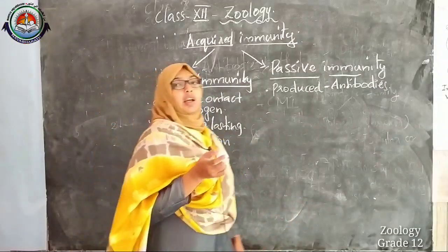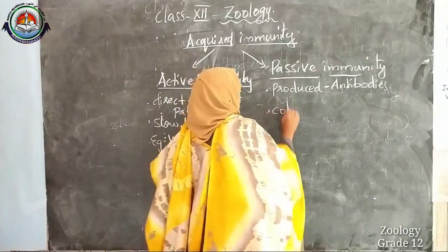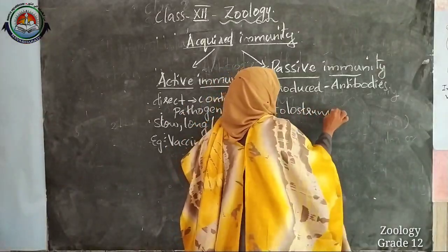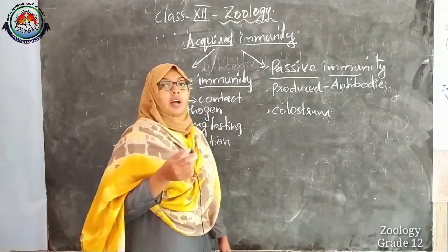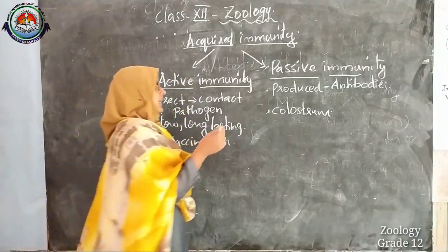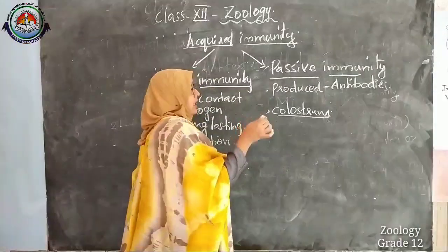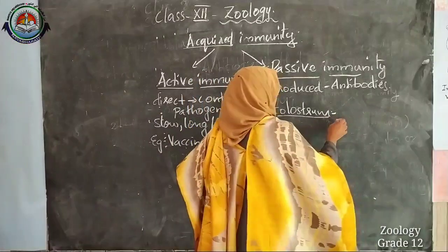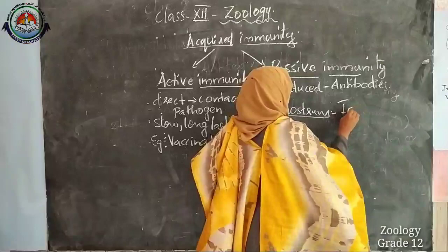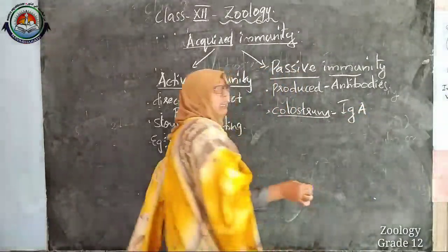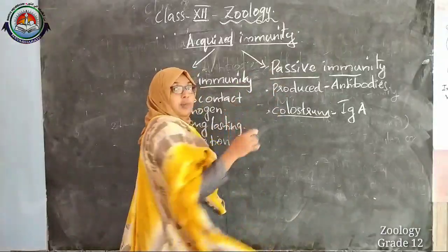For example, colostrum — the first milk produced soon after a child's birth — should be fed to the young baby since it is comprised of many antibodies. It is antibody-rich and typically consists of immunoglobulin A. So it constitutes passive immunity.